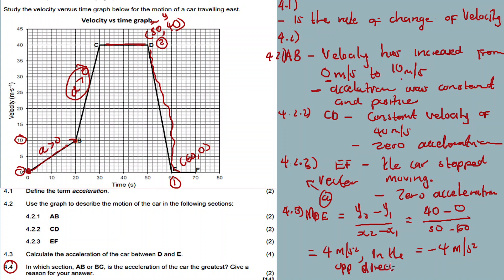Question 4.4: In which section, A-B or B-C, is the acceleration of the car the greatest? Give a reason for the answer. Now, which one has the greatest acceleration between A-B and B-C? Is it A-B or is it B-C, and why? Compare the slope, the steepness, the gradient of A-B and gradient of B-C.